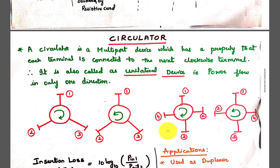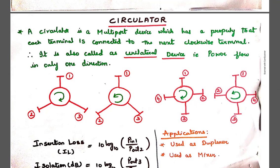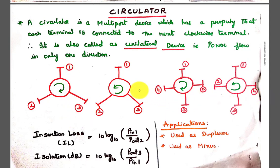Coming to the circulator: the circulator is a multiport device with the property that each terminal is connected to the next clockwise (or anticlockwise) terminal. It is also called a unilateral device — power flows in only one direction. In a clockwise 3-port network, power incident at port 1 comes out from port 3 and no power comes from port 2. Similarly, if power is incident at port 2, it comes from port 1 only, with no power from port 3. Multiport devices (4-port, 5-port, 6-port, etc.) can be constructed. The incident power at one port transmits only through the adjacent port in a clockwise or anticlockwise direction.